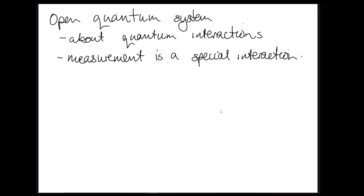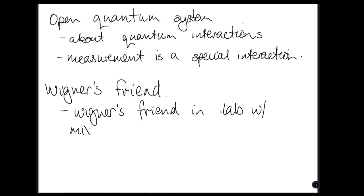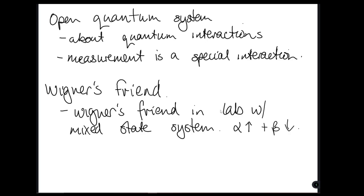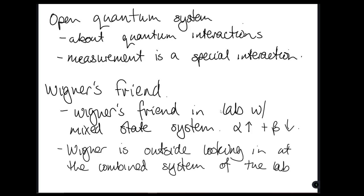Our most basic model for an open quantum system is a thought experiment called Wigner's Friend. Wigner's Friend is in a lab with a mixed state system — the combination alpha times up plus beta times down, representing this probabilistic system. Wigner is outside looking in at the combined system of the lab and the electron. Wigner's Friend — the person in the lab — is the one doing the actual closed system interaction. There is some idealism to this, which is why experimental results are always messy, but you can still do stuff with this as a model.